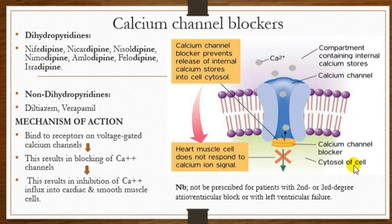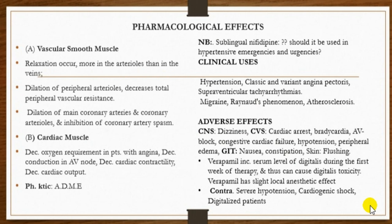Calcium binds with troponin, allowing interaction between actin and myosin, leading to muscle contraction. When a calcium channel blocker is used, it binds to receptors on the voltage-gated calcium channels. This results in blockade of calcium entry into the cytosol, thereby reducing contraction of both the heart and smooth muscles of the body.